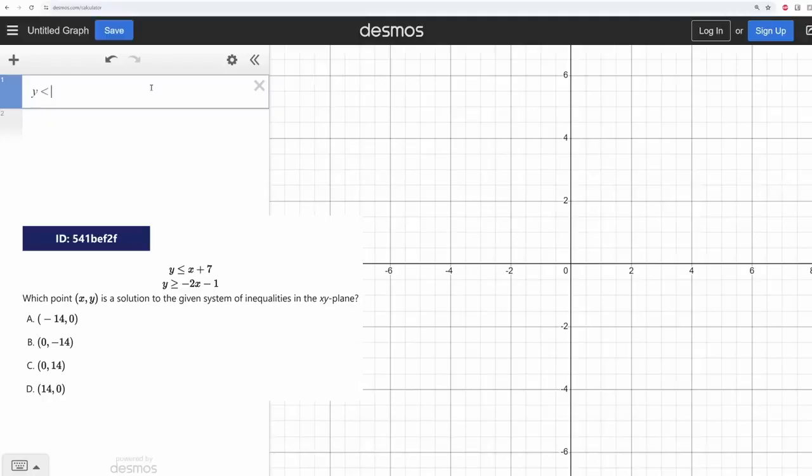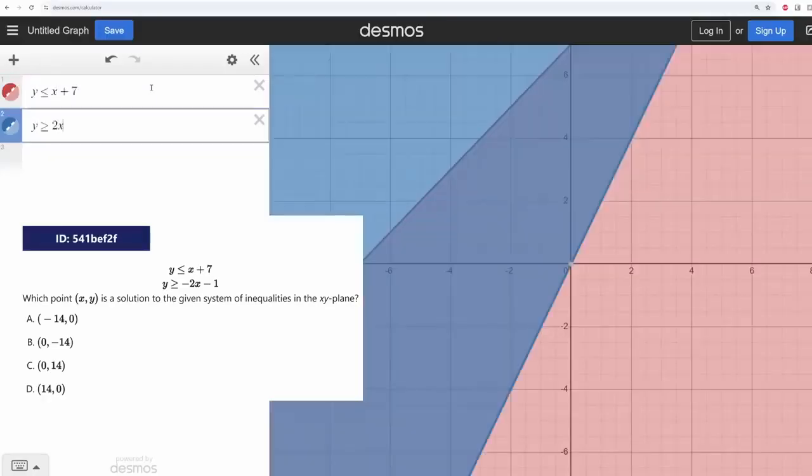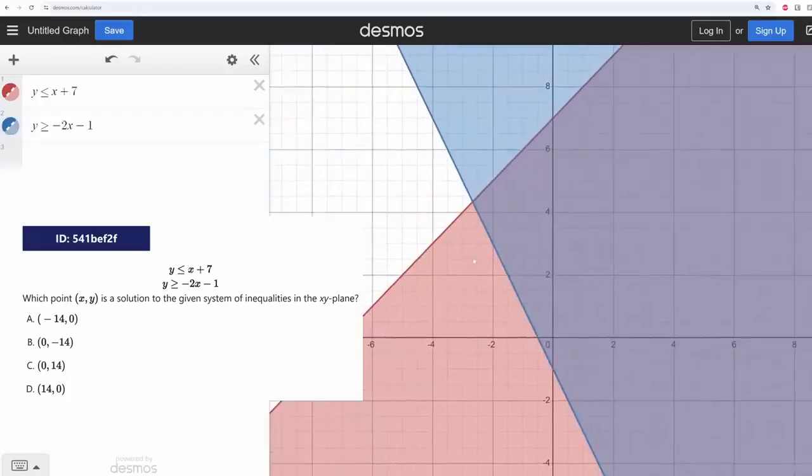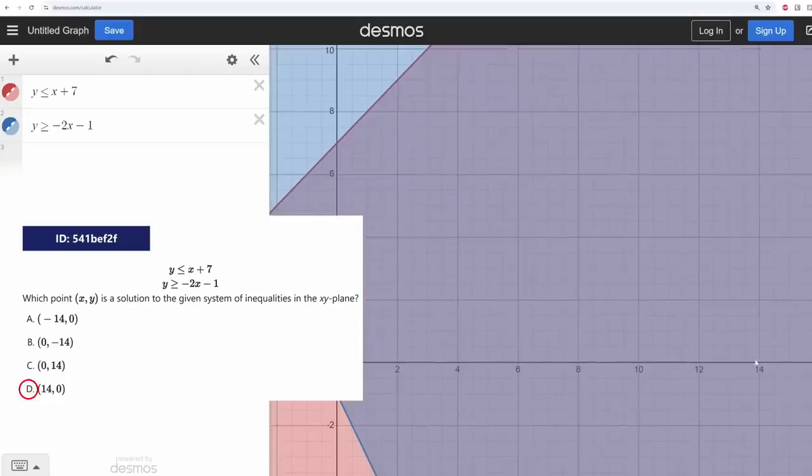Just like systems of equations, you can solve systems of inequalities just by plugging them straight into Desmos. Desmos will shade the regions that satisfy each inequality. So for a problem like this, where you're trying to find a solution, you don't need to look for the point of intersection, but rather any point where the red and blue regions overlap. In that case, this would be 14-0.